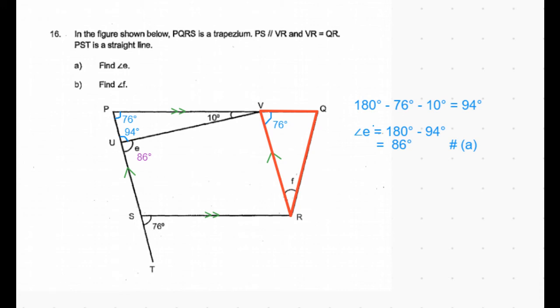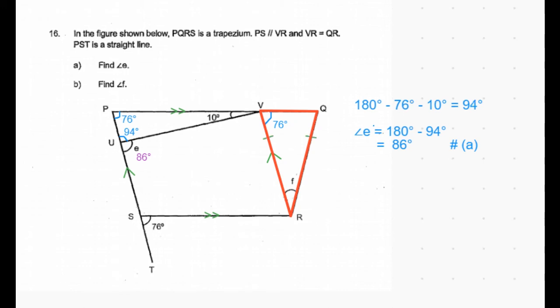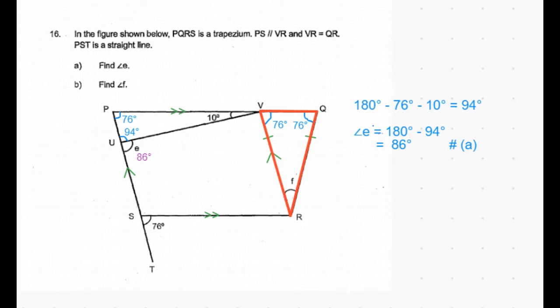VR is given to be equal to QR, so let's mark them. This becomes an isosceles triangle, which means the opposite angles are equal. So angle VQR is also 76 degrees.